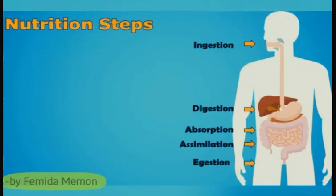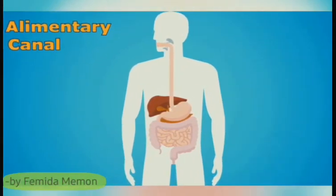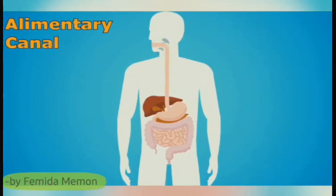Egestion: removal of undigested food in the form of feces through the anus. The entire process of nutrition is carried out in the alimentary canal, also called the digestive tract. The alimentary canal is a long tube-like structure which is the main part of the digestive system. Most of the digestive organs are part of the alimentary canal.